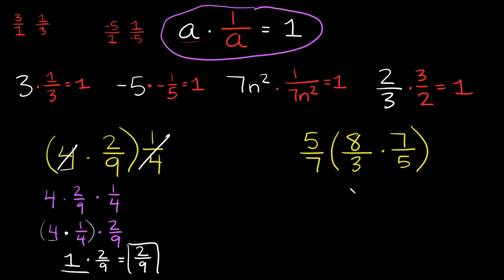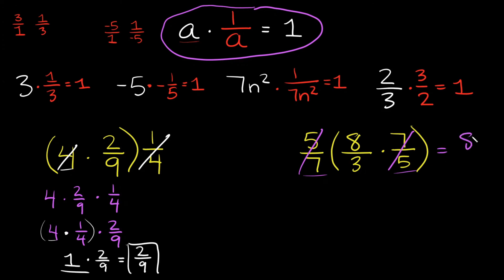One more example where the inverse property is helpful: 8 over 3 times 7 over 5 in parentheses, multiplied by 5 over 7. Since we're just multiplying everything together we don't need the parentheses. You'll notice we have 5 over 7 and its reciprocal 7 over 5 — those cancel each other out and reduce to 1, so we're just left with 8 over 3. Your answer is 8 over 3.